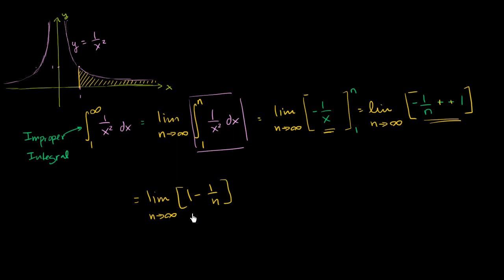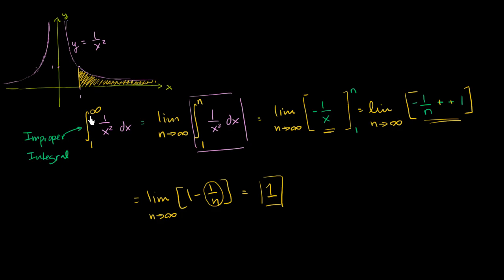Lucky for us, this limit actually exists. As n approaches infinity, the term 1 over n gets closer and closer to 0, so this is going to be equal to 1. We have an area with no right boundary that just keeps going forever, but we still have a finite area — exactly equal to 1. Because we were able to evaluate it and come up with a finite number, we say this improper integral is convergent. If the area were infinite and we couldn't get a finite number, we would say it is divergent.